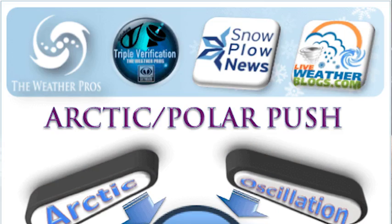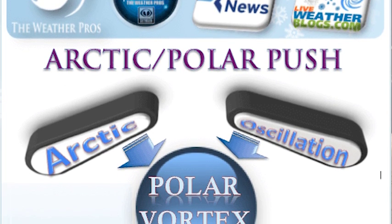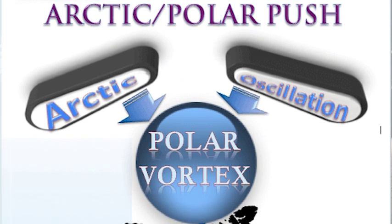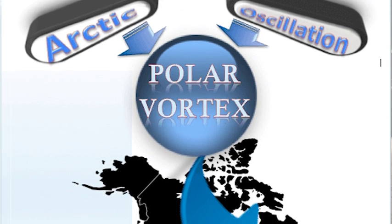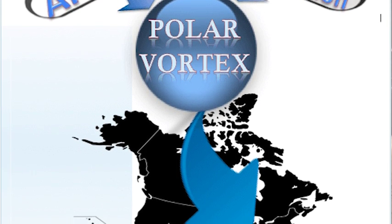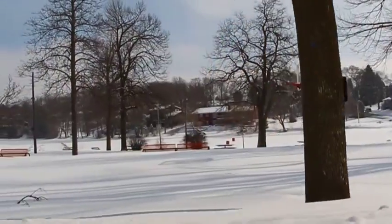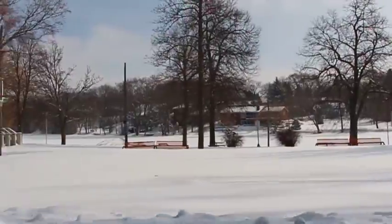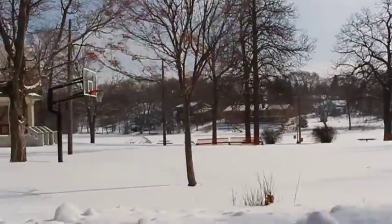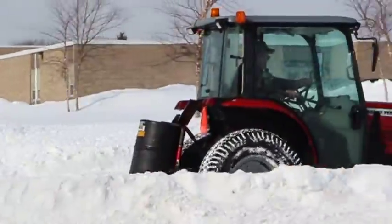It's like a pinball machine — we're going old school here. Think of the flippers as the Arctic oscillation. When they flip that ball — known as the polar vortex — into play, it comes down into the United States, as you can see on the graphic. The Arctic oscillation's flippers go back and forth, and when they push that big ball of cold air down into the United States, things get well below normal.